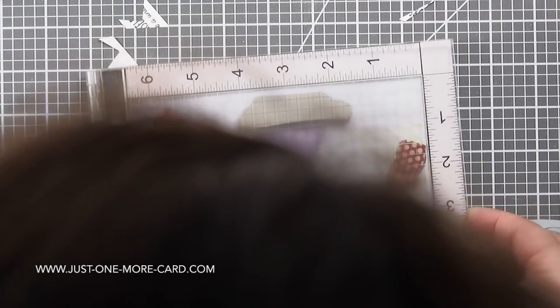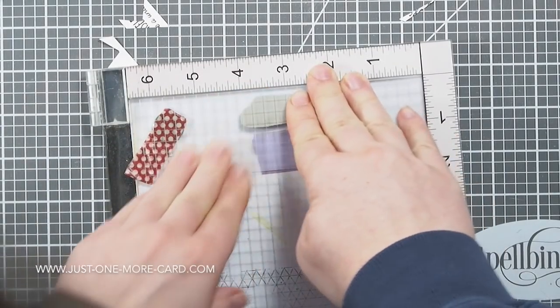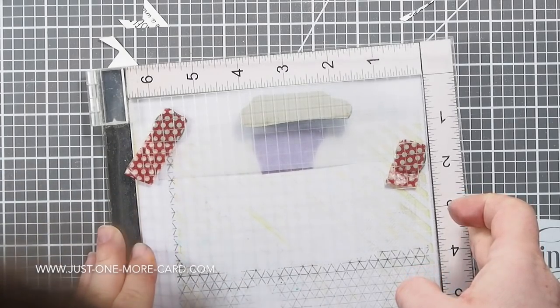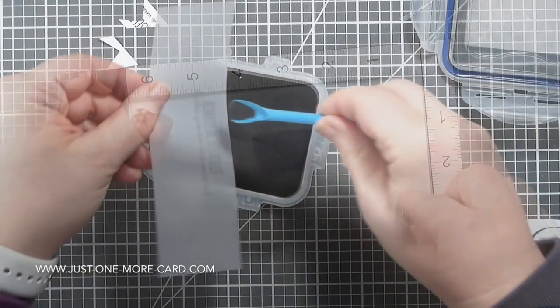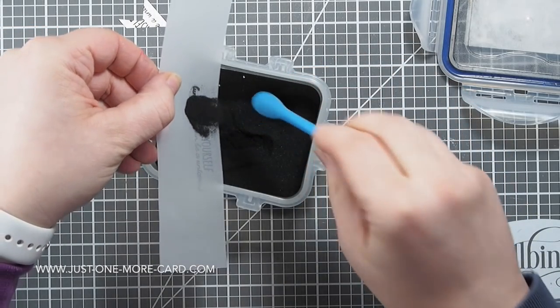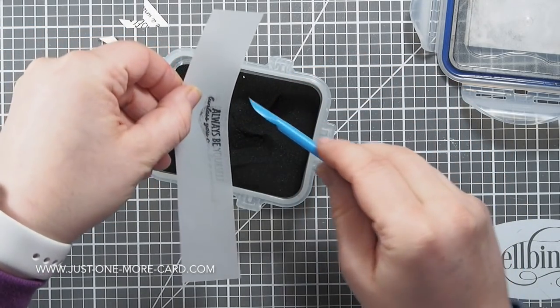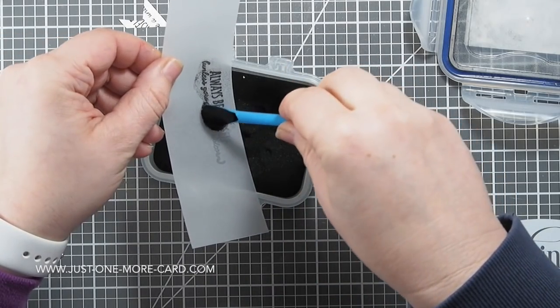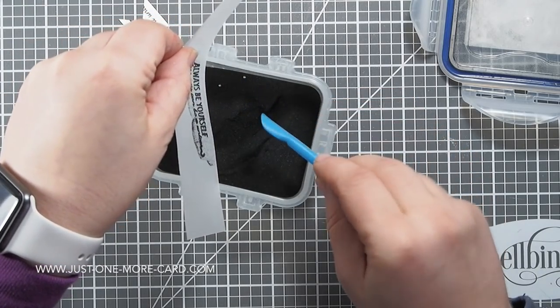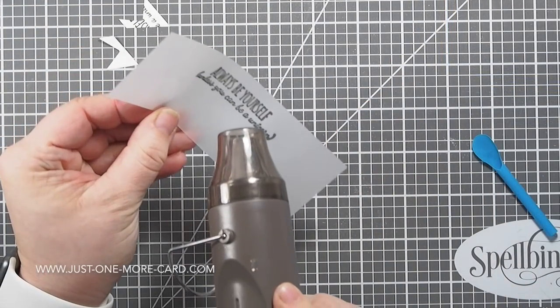Now I'm stamping my sentiment with Versafine, a sticky ink, onto vellum. I'm using vellum because I decided I don't want to cover up my rainbow effect with paper. It was actually my first attempt—I wanted the rainbow colors to really shine, literally. So I decided to use vellum so it wouldn't be as invasive or cover up as much.